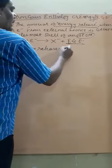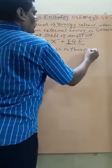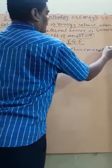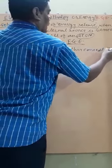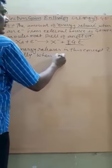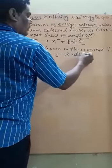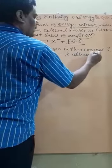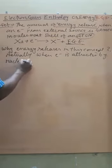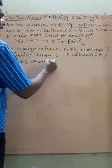Let X be an element and A be its atom. Here the electron is gained by the atom, so the atom converts into an anion, because addition of an electron makes the species anionic. This amount of energy released is known as electron gain enthalpy.